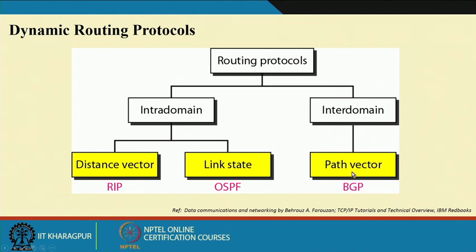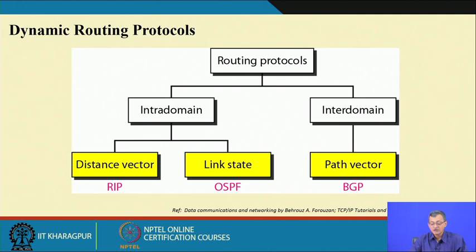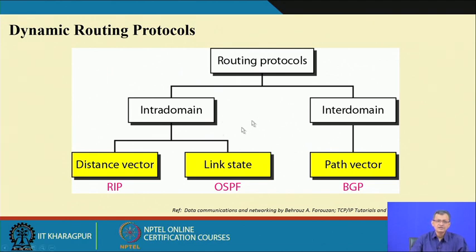In the inter-domain category, we have the concept of path vector routing, and the predominant protocol there is BGP — Border Gateway Protocol. Today's discussion will primarily hover around distance vector and link state protocols.